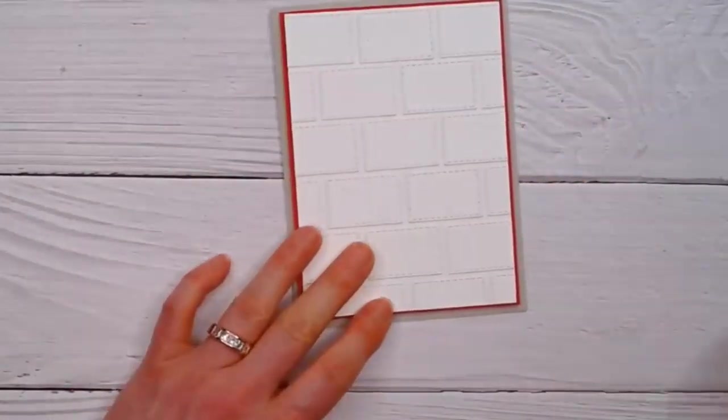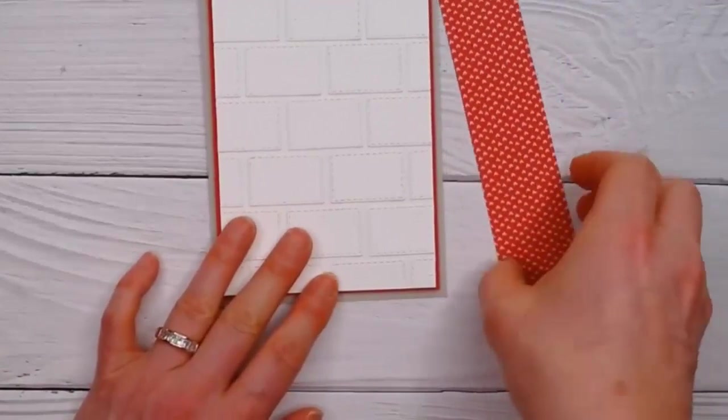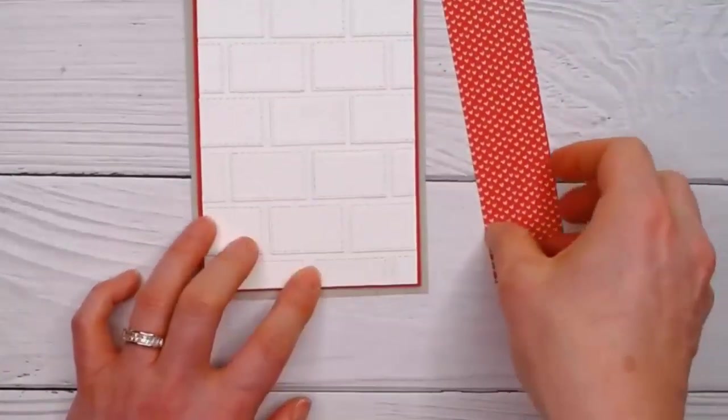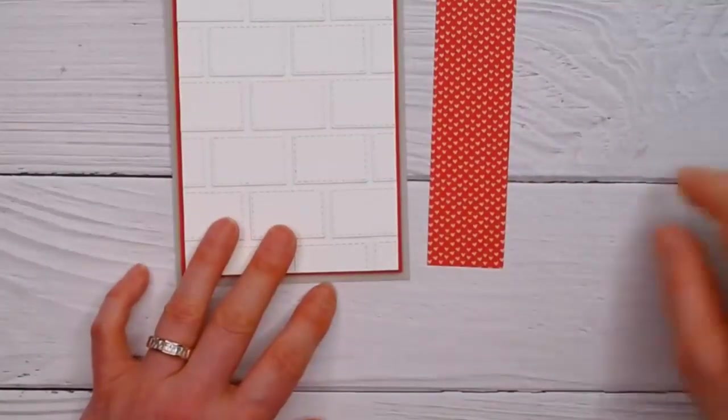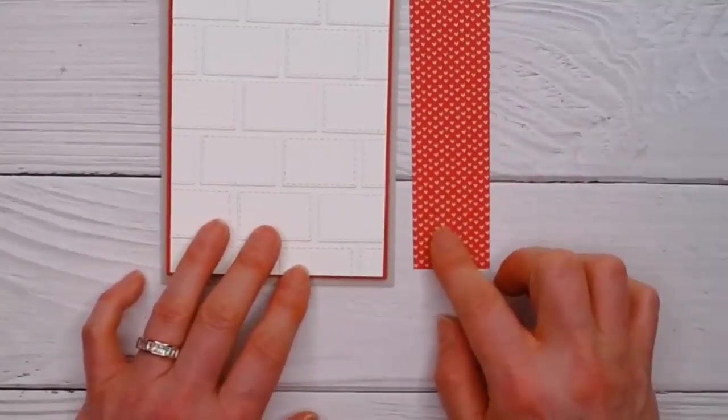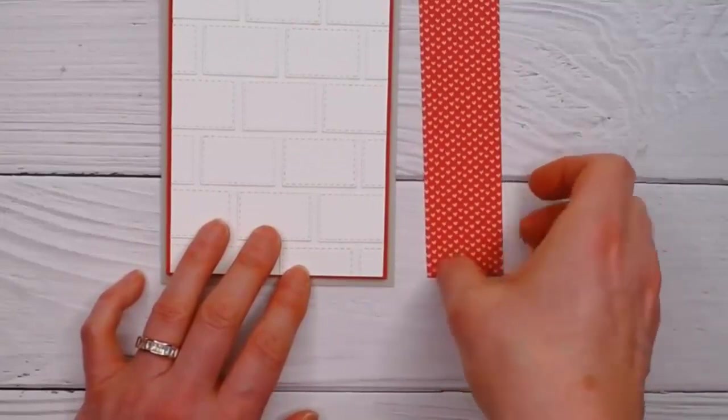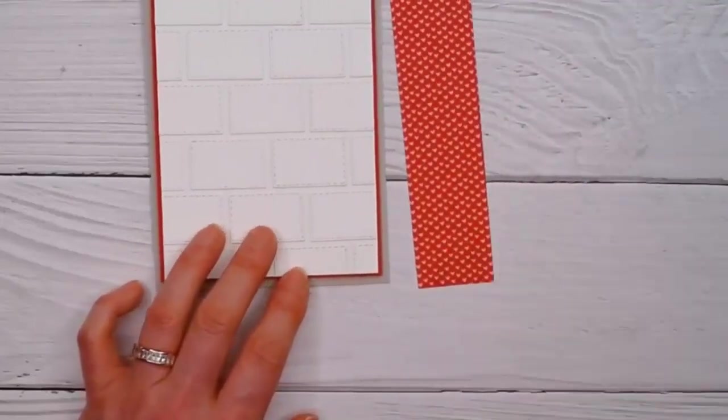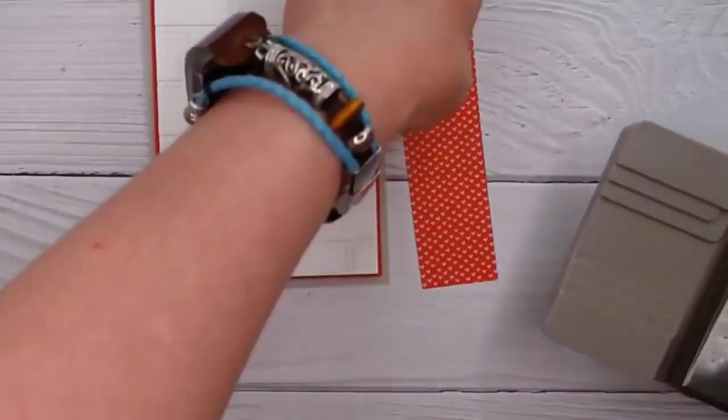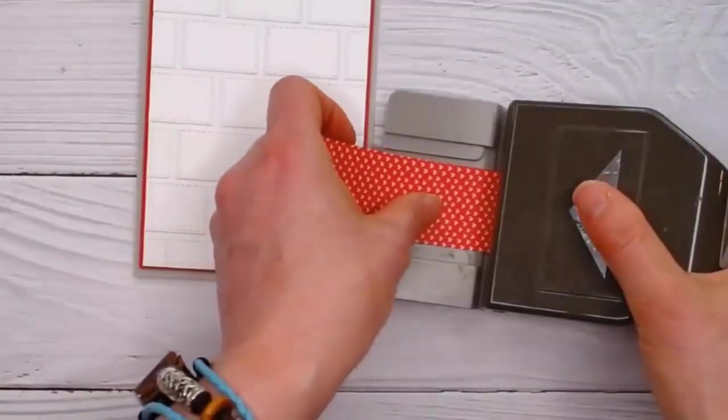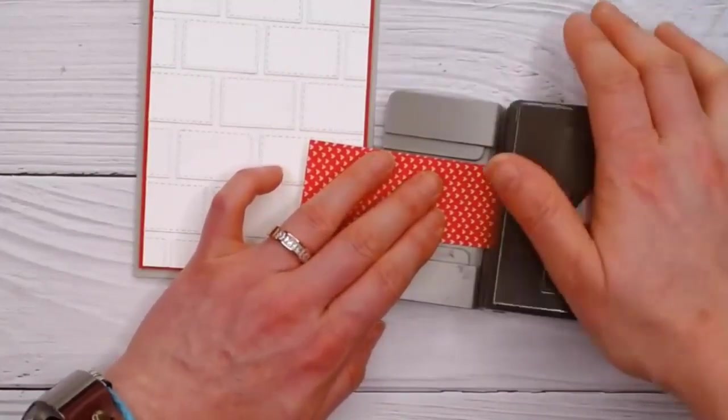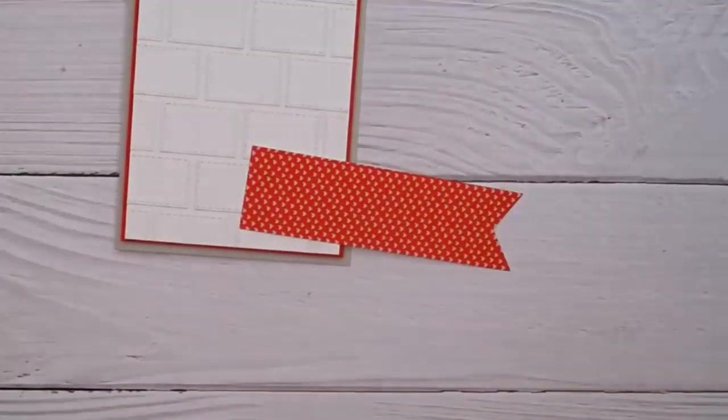Then the next thing I want to do is put on my little tag or banner. Make sure your hearts are going the right way. Now this is from the snail mail papers. I'm going to use my banner label punch and slide that in there and just punch that down. Nice and quick and easy.